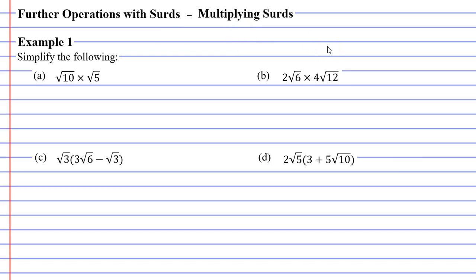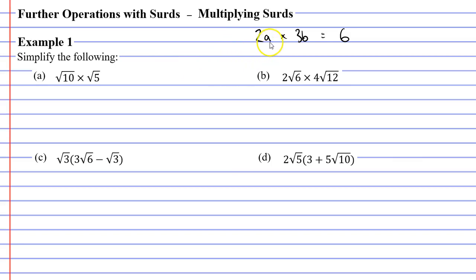So let's take, for example, 2a times 3b. When we multiply expressions like this, the first thing we do is multiply the whole numbers: 2 times 3 gives us 6. The second thing we do is multiply together the pronumerals: a times b gives us ab.